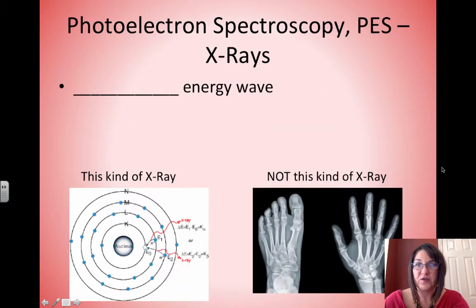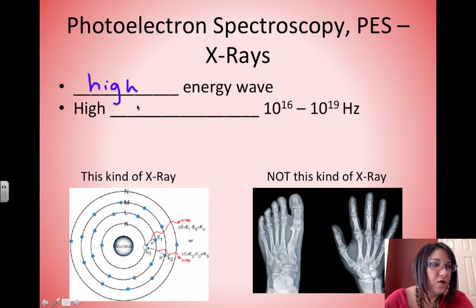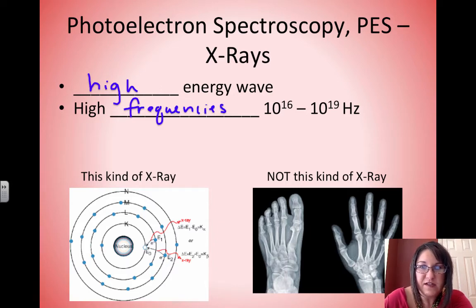Photoelectron spectroscopy, or PES, utilizes X-rays, and X-rays are very high energy waves. That means those waves have very high frequencies, typically in the range of 10^16 to 10^19 hertz.